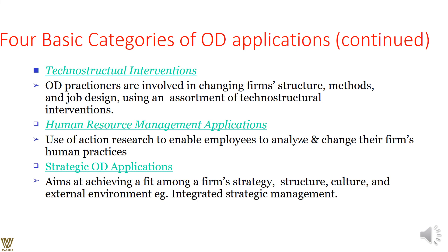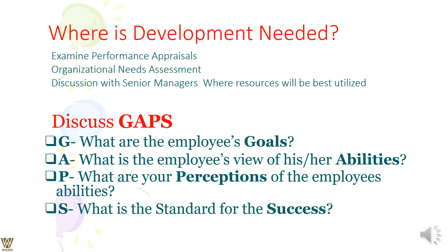The fourth category is strategic organizational development applications, which aim at achieving a fit among a firm's strategy, structure, culture, and external environment — for example, integrated strategic management. Where development is required, there are two key parts: first, individual requirements through performance appraisal; second, organizational needs. Then we can have discussions with organizational managers about where resources will be utilized.